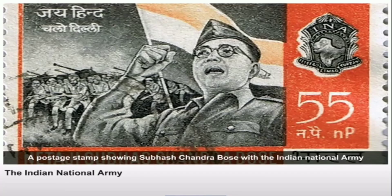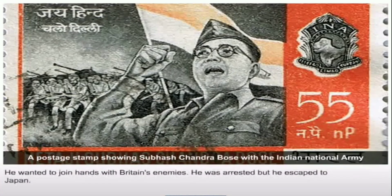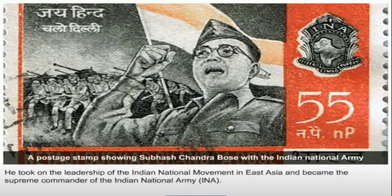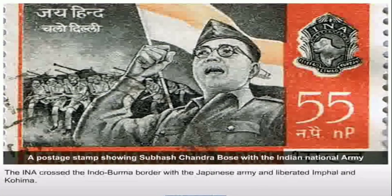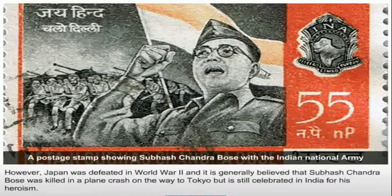The Indian National Army: Subhash Chandra Bose resigned from the Congress in 1939. He formed a new party called the Forward Bloc. He wanted to join hands with Britain's enemies. He was arrested but he escaped to Japan. He took on the leadership of the Indian National Movement in East Asia and became the Supreme Commander of the Indian National Army, the INA. The INA crossed the Indo-Burma border with the Japanese army and liberated Imphal and Kohima. However, Japan was defeated in World War II and it is generally believed that Subhash Chandra Bose was killed in a plane crash on the way to Tokyo, but he is still celebrated in India for his heroism.